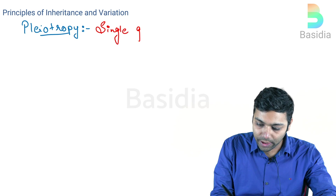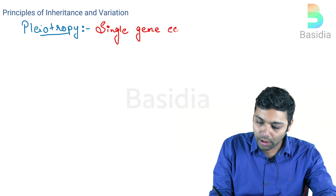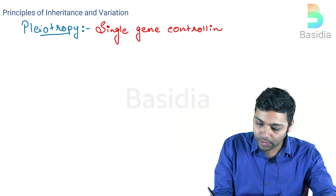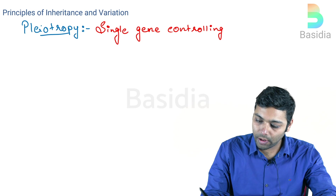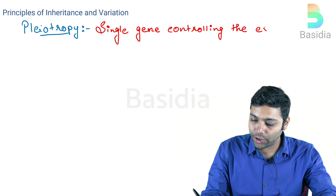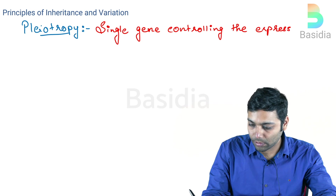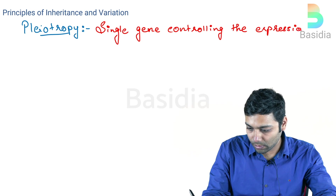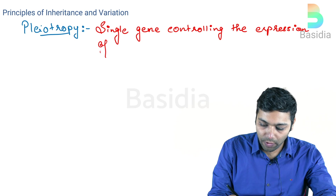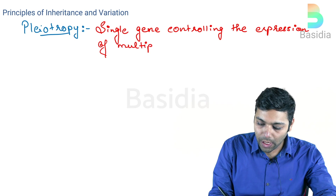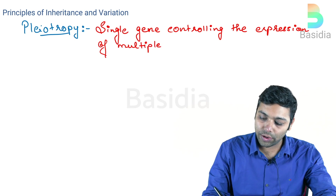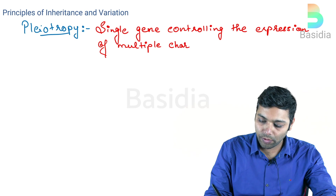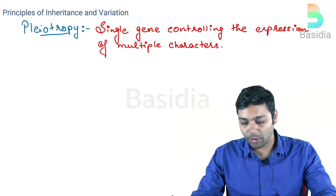So pleiotropy is defined as a single gene controlling the expression of multiple characters.